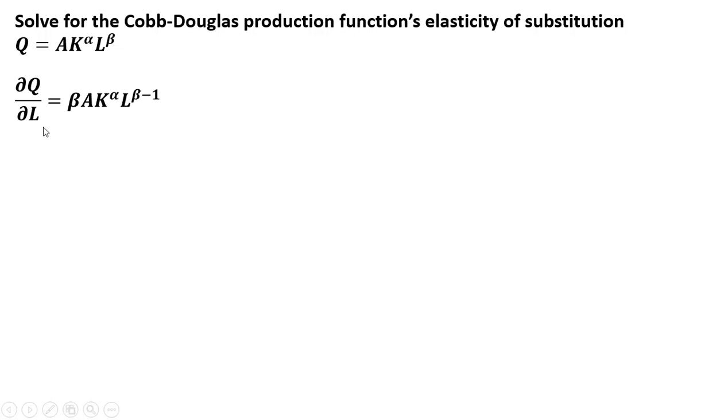We get the marginal product of labor by taking the partial derivative of Q with respect to L. On this L term, we've got this exponent beta. We bring that down in front, and then we subtract 1 from that exponent, so it's beta minus 1.